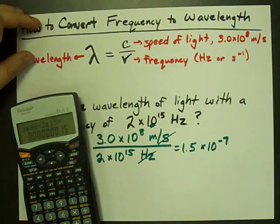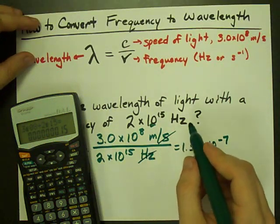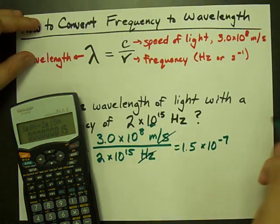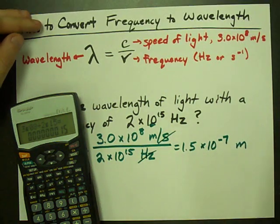My Hertz and my per seconds cancel each other out because Hertz are seconds to the minus 1, and I'm left with meters. There you go, there's your wavelength.